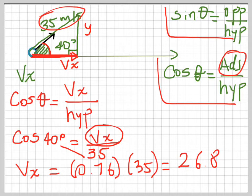When we kick a ball—it could be a football—and the angle between the velocity vector and the horizontal is 40 degrees, with initial velocity of 35 meters per second, the horizontal component is 26.8 meters per second. This is how to find the horizontal component of a velocity vector.